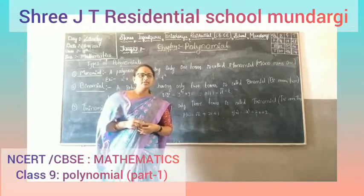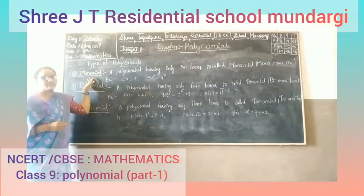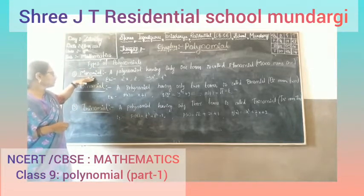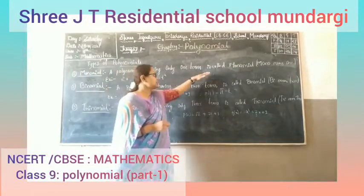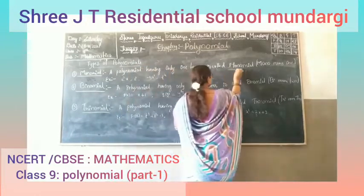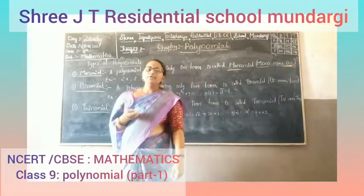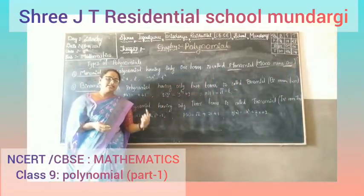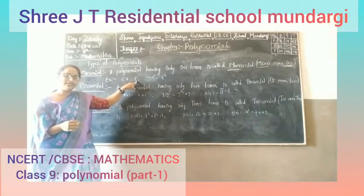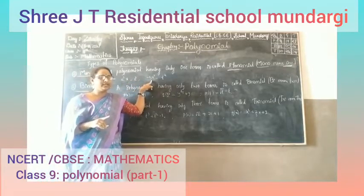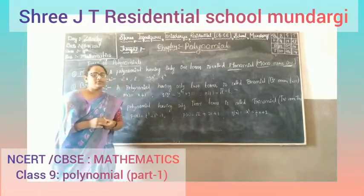Now let's look at the types of polynomials. The first type is monomial. Monomial means a polynomial having only one term — 'mono' means one. For example, 2x is a monomial, the number 2 alone is a monomial, minus x squared is also a monomial, and t to the power 4 is also an example of a monomial.